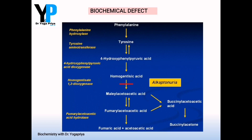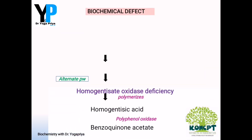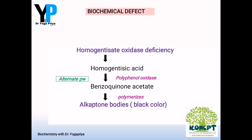In alkaptonuria, the enzyme catalyzing the fourth step is deficient, so the intermediate homogentisic acid accumulates. The accumulated homogentisic acid takes an alternate pathway — it undergoes polymerization where, with the help of the enzyme polyphenol oxidase, it gets converted to benzoquinone acetate, which then polymerizes to alkapton bodies that have a black colour, which is the main reason for pigmentation wherever they get deposited.